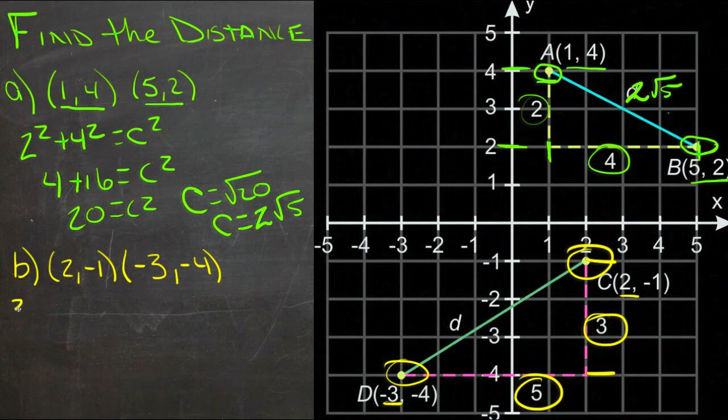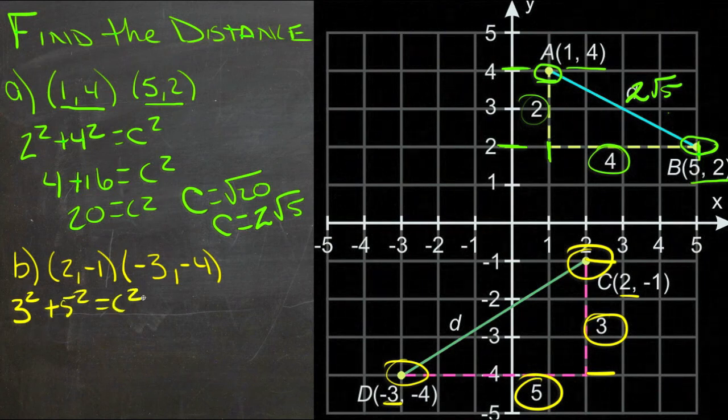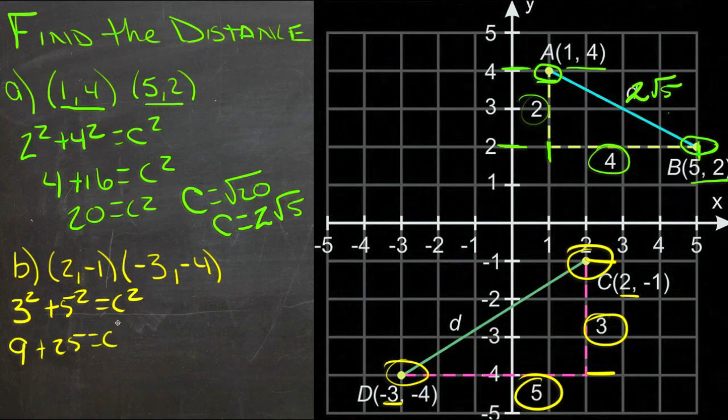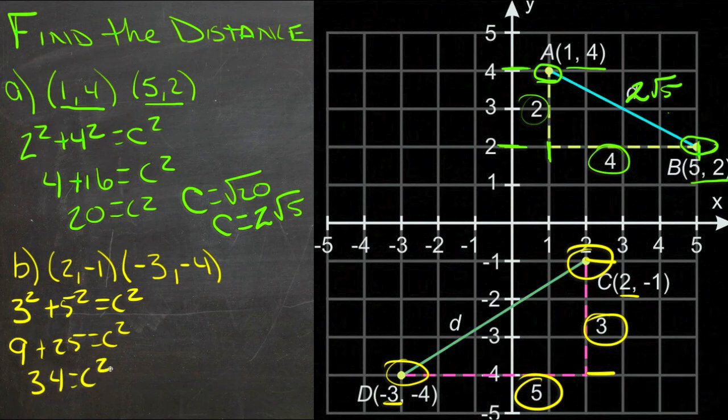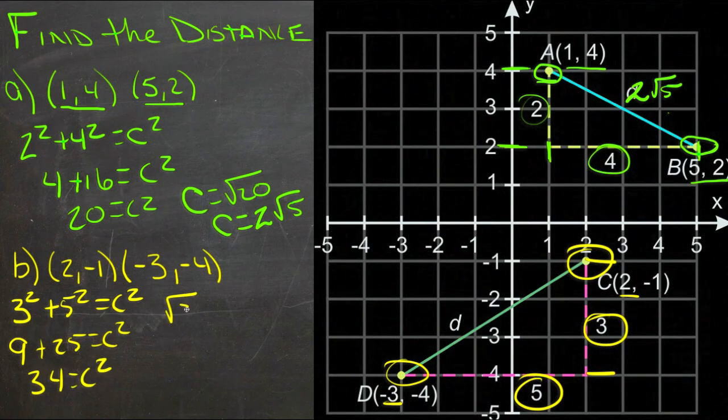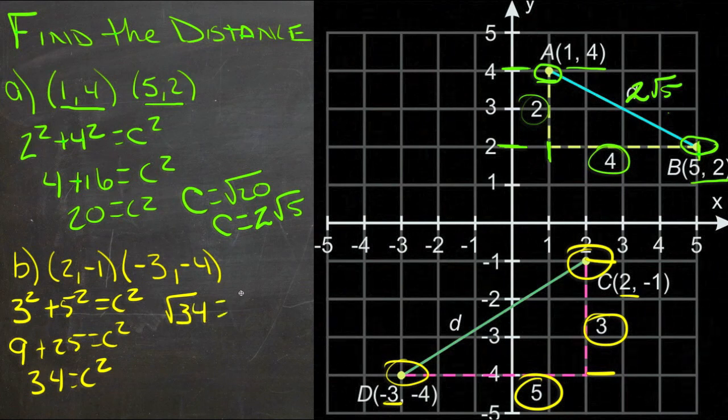So we plug that into the theorem. 3 squared plus 5 squared equals c squared. 9 plus 25 equals c squared. 34 equals c squared. So the square root of 34 equals c.